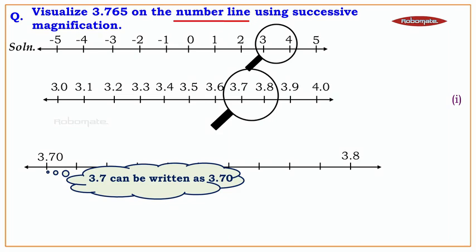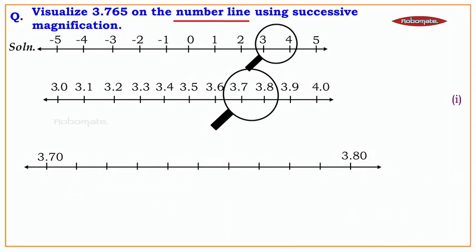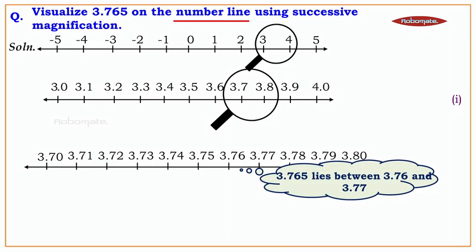3.7 can be written as 3.70 and 3.8 as 3.80. After 3.70 the numbers are 3.71, 3.72, 3.73, 3.74, 3.75, 3.76, 3.77, 3.78, 3.79, and last is 3.80. The number 3.765 lies between 3.76 and 3.77 on this third number line.